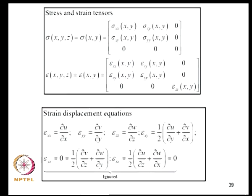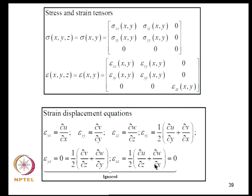Using the strain-displacement relations: epsilon_XX, epsilon_YY, epsilon_ZZ, and epsilon_XY are the relevant strains. Although epsilon_YZ and epsilon_XZ are zero, the strain-displacement conditions for these cannot be strictly honored—they are simply ignored in further development, and that is where the approximation enters. The model is not exact in the sense that substituting the plane stress solution back into 3D equations will not satisfy all 6 compatibility equations.